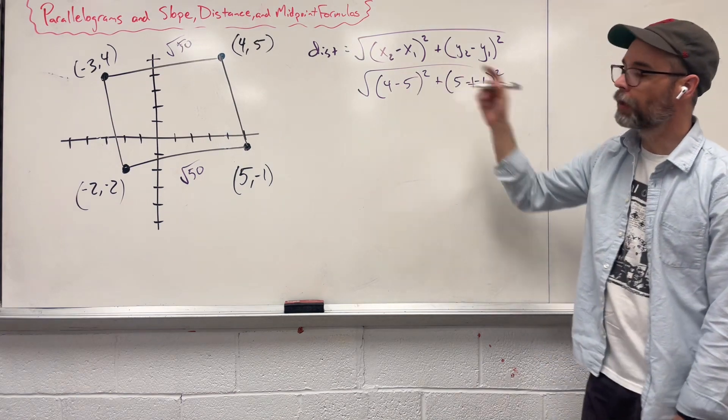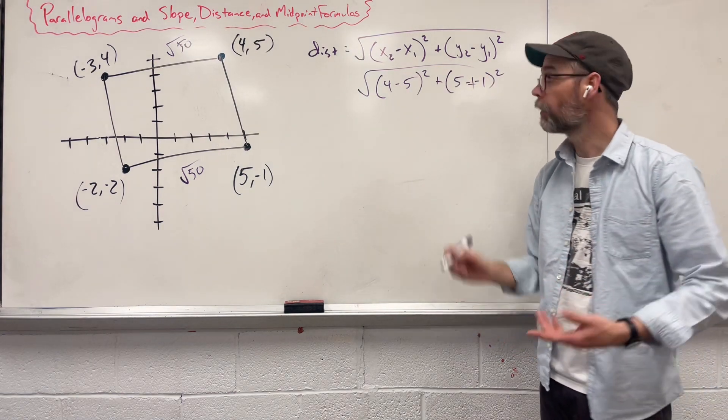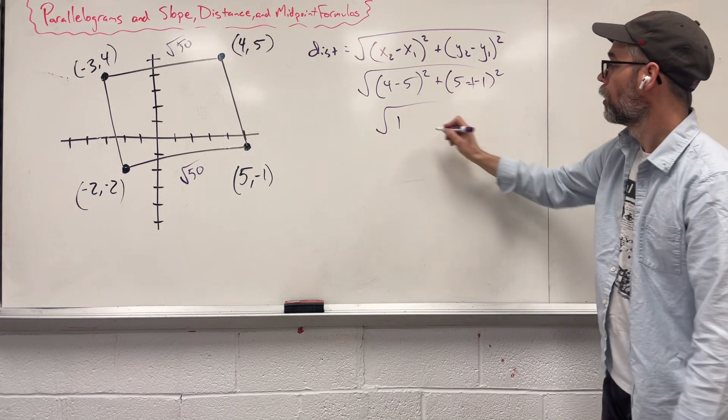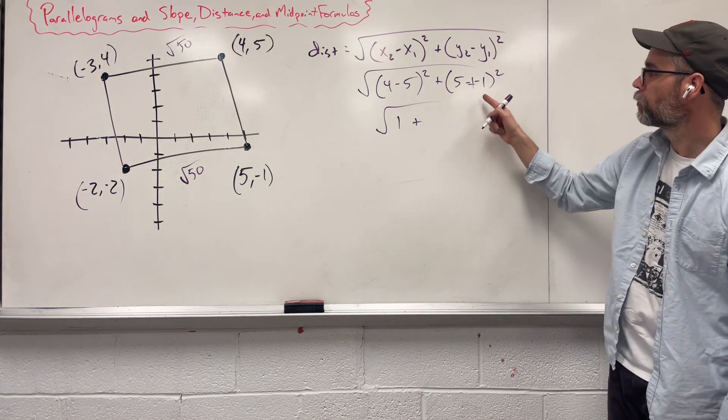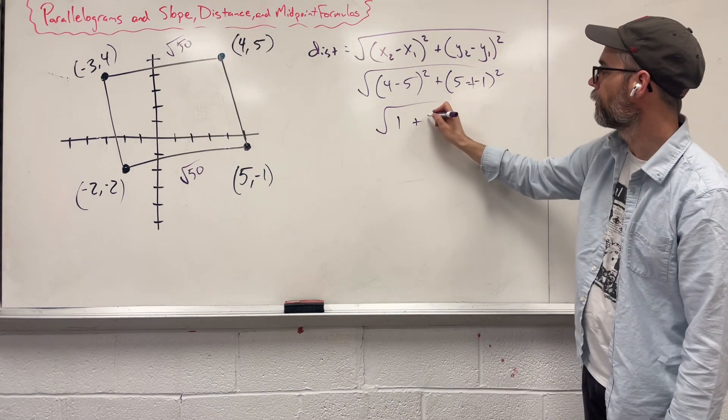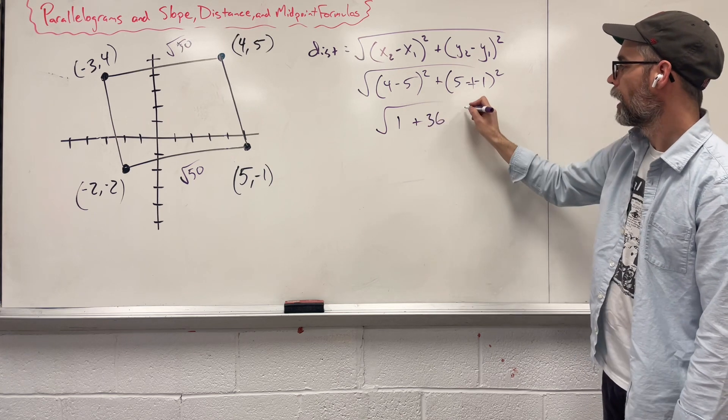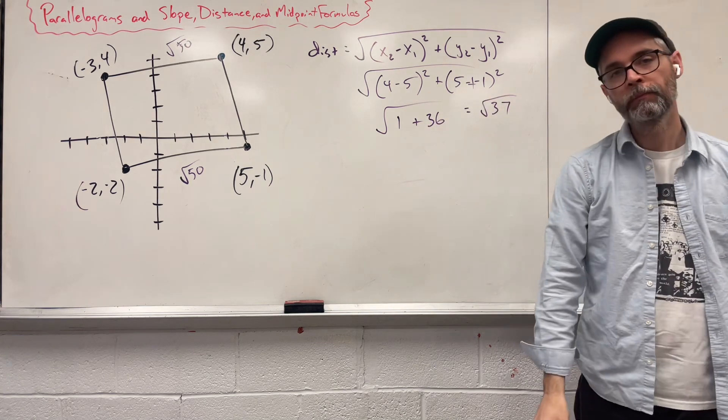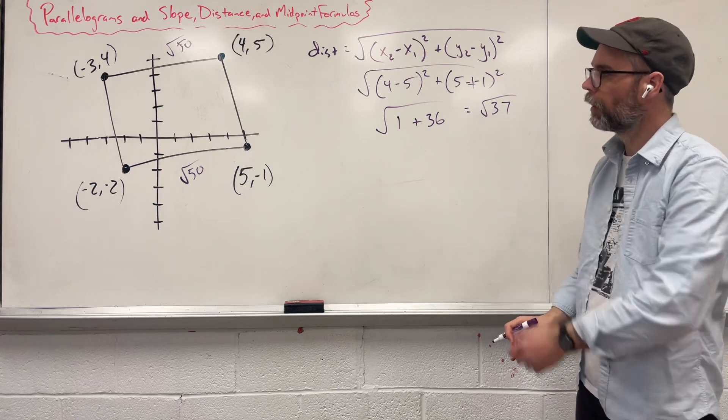Leaving us with 4 minus 5 is negative 1, but square it, you get 1, plus 5 plus 1 is 6, square that, you get 36, and that's the same thing as saying square root of 37. Don't know what it is, don't care.